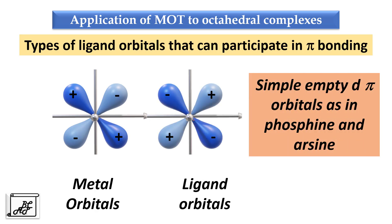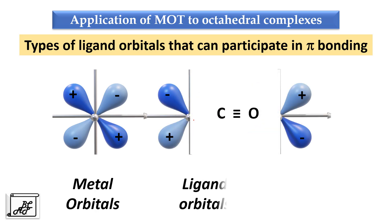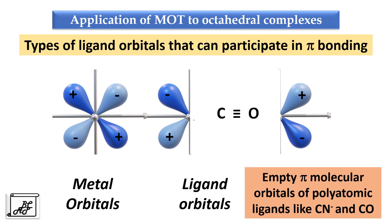The second type of ligand orbitals are empty d-pi orbitals, as in the case of phosphine and arsine. Phosphorus, for example, has outermost electronic configuration 3s2-3p3, and also has an empty d orbital. These empty d-pi orbitals are available for pi bonding with the central metal atom. The third type are empty pi molecular orbitals of polyatomic ligands like cyanide and carbon monoxide. When carbon monoxide is formed, only bonding molecular orbitals contain electrons; the antibonding molecular orbitals are empty. These empty pi antibonding molecular orbitals can accept electrons from the central metal atom and participate in pi bonding.